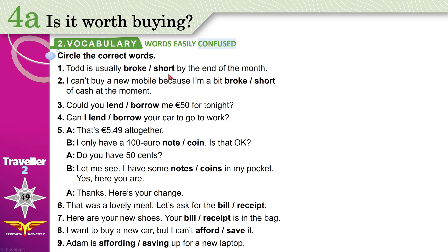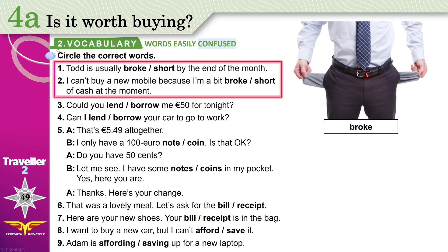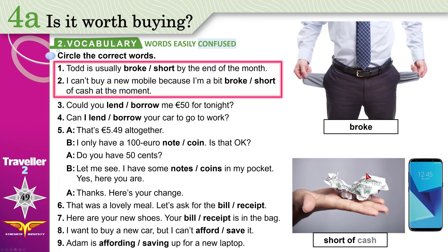First: Broke and Short. This man is broke — he has no money at all. This man is short of cash — he wants to buy a new mobile phone but he doesn't have enough money. Todd is usually broke by the end of the month. You can't say 'a little broke' — you say 'a little short of money' or 'short of cash at the moment.'